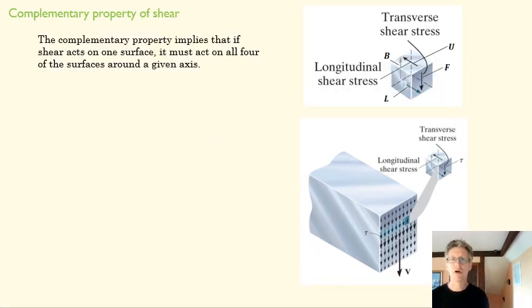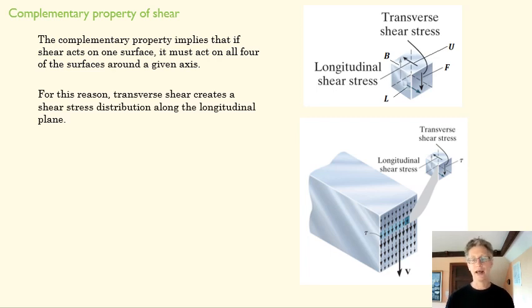So the complementary property of shear suggests that if we have a shear in one direction of a cube, we're going to have a shear on the other three so that we can remain at equilibrium. It implies that if a shear acts on one surface, it's going to act on all four of those surfaces. This creates the really interesting result that if I push down on this railroad tie, not only do I create a shear across it, but I create a shear along it. These shears are going to be approximately the same order of magnitude, but they're going to be along the length of our railroad tie here. That makes a big difference with wood particularly, because wood's really good at resisting this shear. It's not very good at resisting that shear in the longitudinal direction because of the grain of the wood.